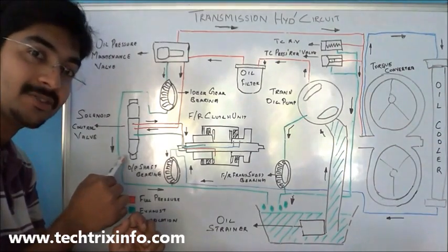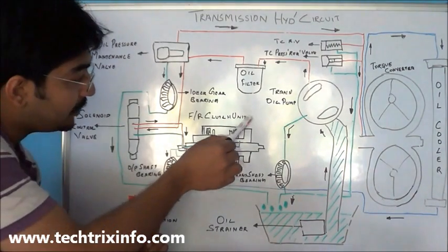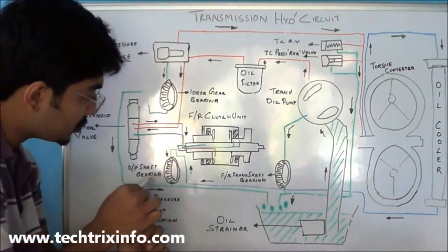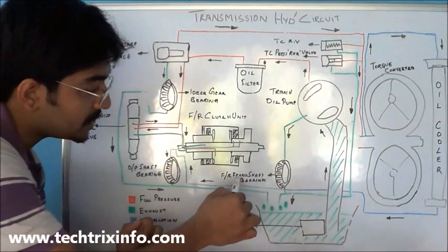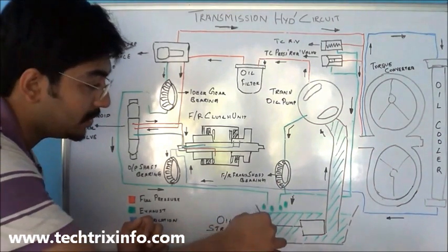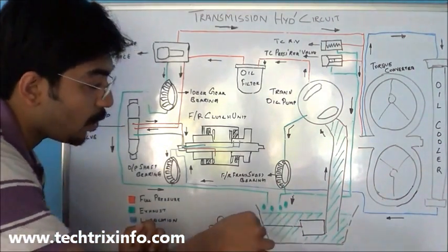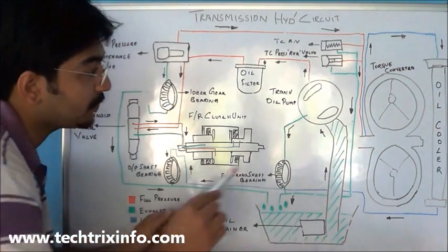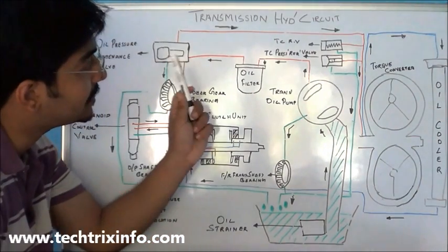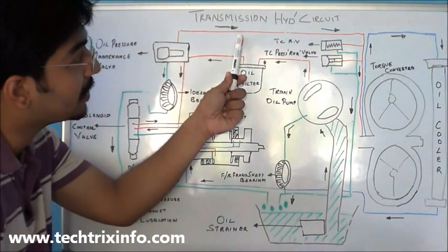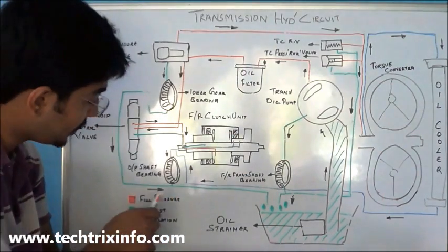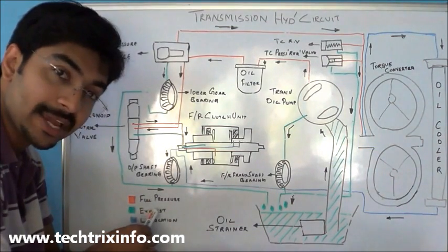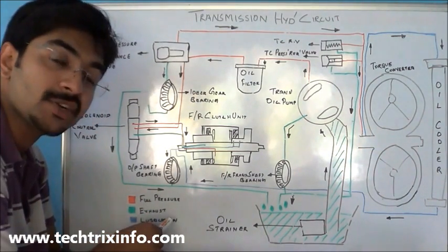This is the solenoid control valve. Here we have the forward reverse clutch unit. This is the output shaft bearing and the forward reverse front shaft bearing. This is the transmission oil sump and the transmission oil strainer. In this circuit I have used three colors: red, blue, and green. The red line shows the full pressure line, the green shows the exhaust line, and the blue indicates the lubrication line.